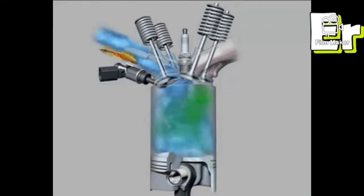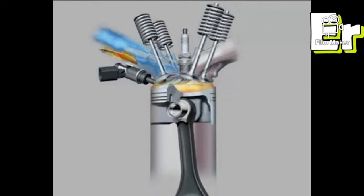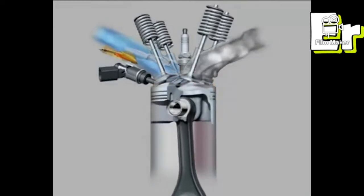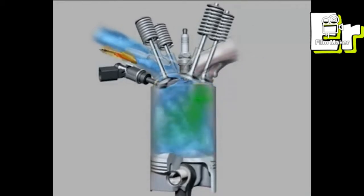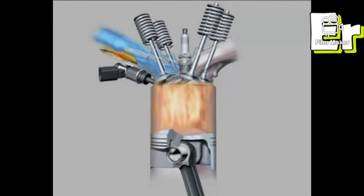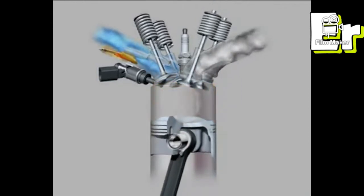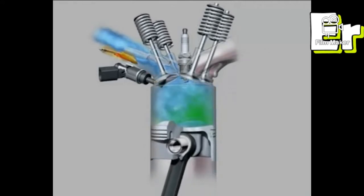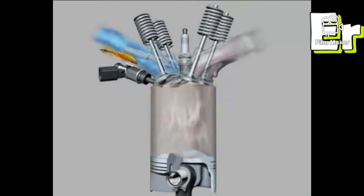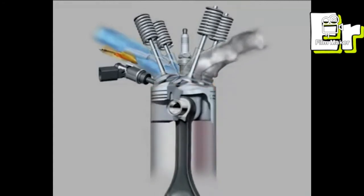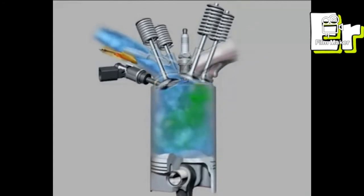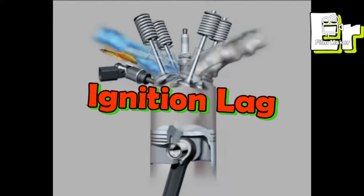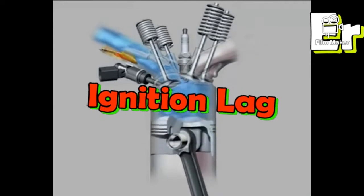Hello friends and welcome to my channel. In this video I'm going to talk about the effects of pre-ignition and post-ignition, and what they mean. To produce maximum torque from a particular engine, we have to generate the spark at an optimum time. In a spark ignition engine, there will be a lag between when we produce the spark and when combustion is initiated — this is called ignition lag.